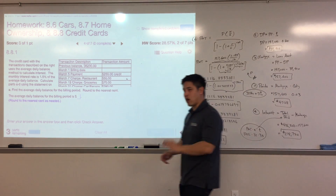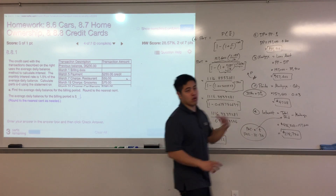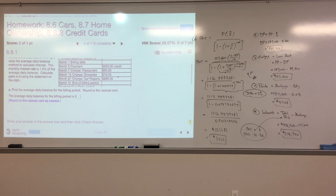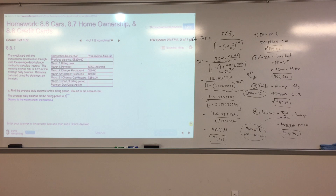For problem four, the average daily balance method is used to calculate credit card interest. The monthly interest rate is 1.5% of the average daily balance. We'll use 'Help Me Solve This' to walk through it. A credit card statement shows a previous balance of $6,230 going into March, with several transactions during the month.